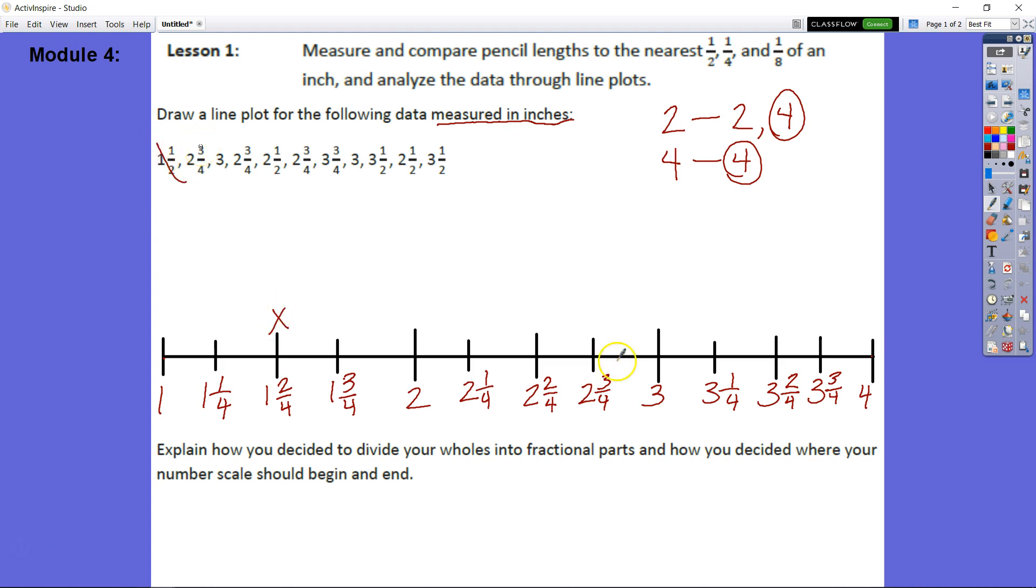Next, we have 2 and 3/4. Well, 2 and 3/4 is already in units, which is fourths. So we can put that in. We know that 3 is also on our line plot already, so we can put that in. Let's cross those out as we move along. 2 and 3/4, once again, is there. We can put that in.